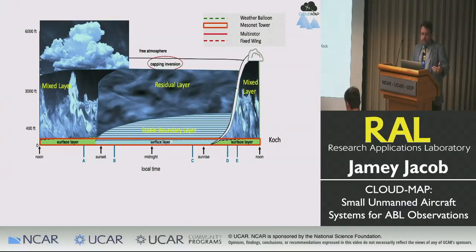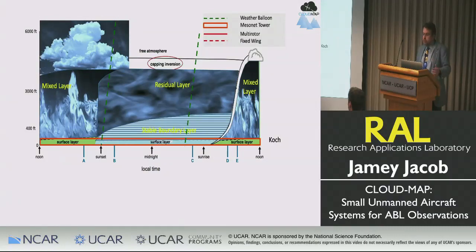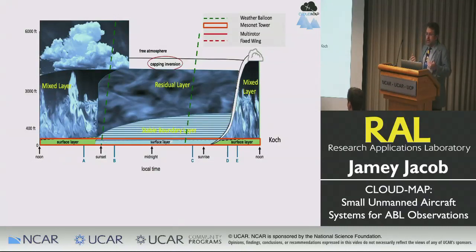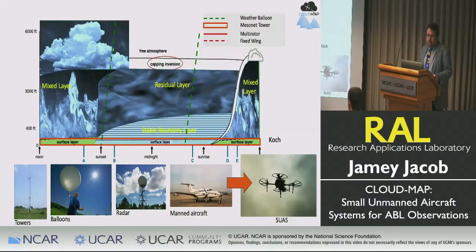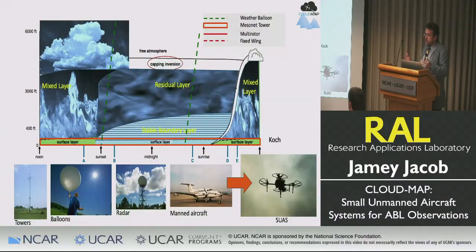Right now we're primarily limited to two tools: towers, which are great for monitoring what's going on at the surface, and radiosondes or weather balloons, launched typically twice a day, that traverse through this portion of the atmosphere very quickly. We end up with a really sparsely sampled dataset, both spatially and temporally, within the ABL itself. What we'd like to do is not replace any of these systems but augment them with small unmanned aircraft systems, which range from off-the-shelf systems to much larger platforms.